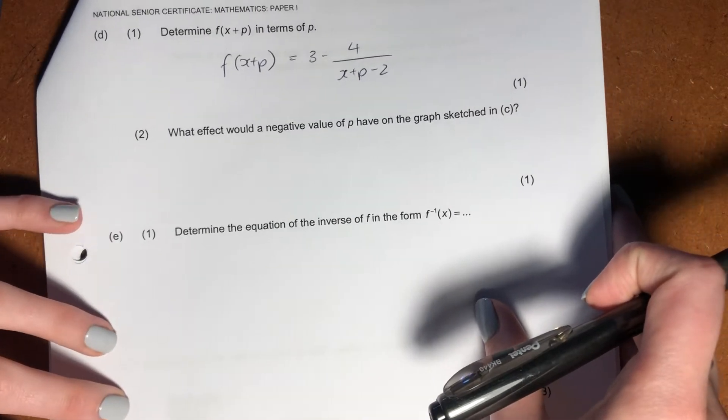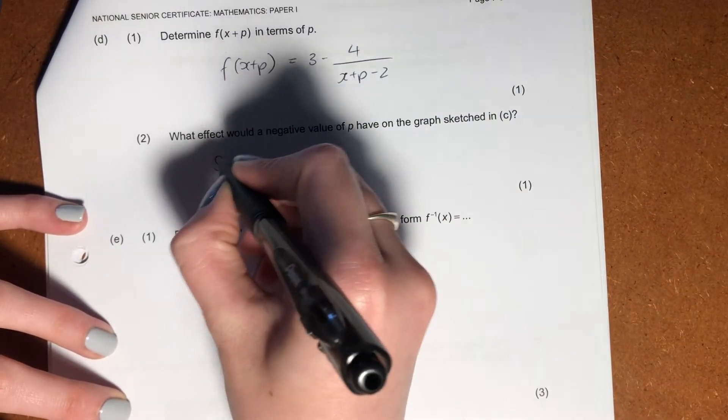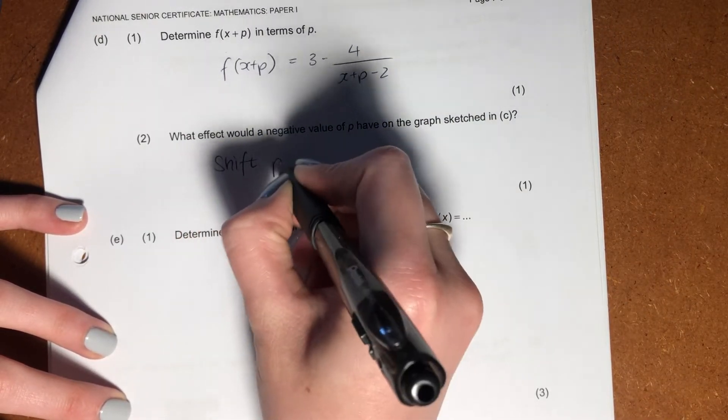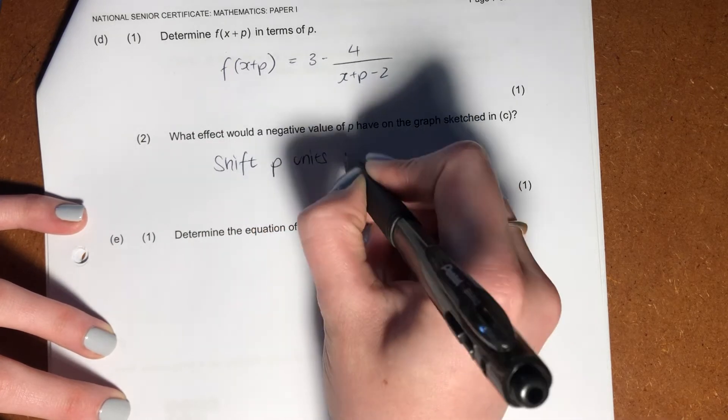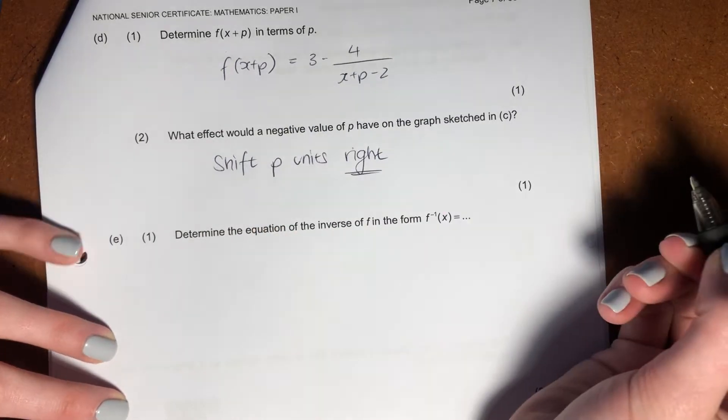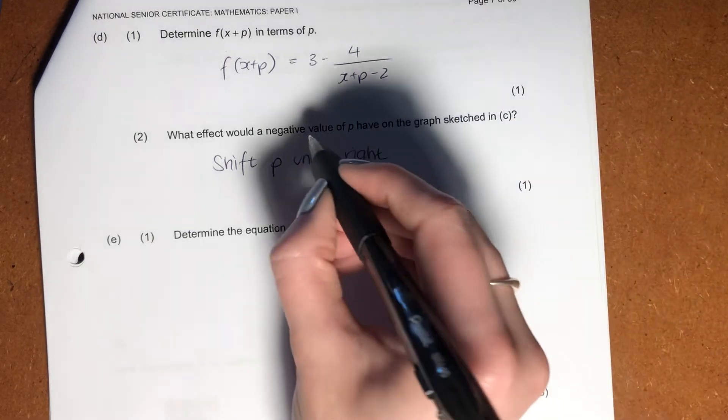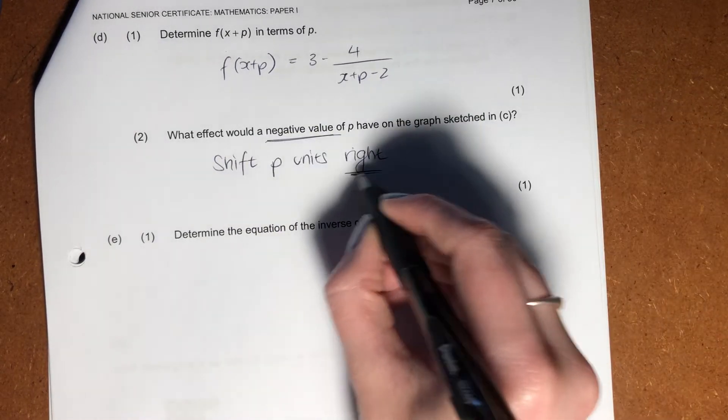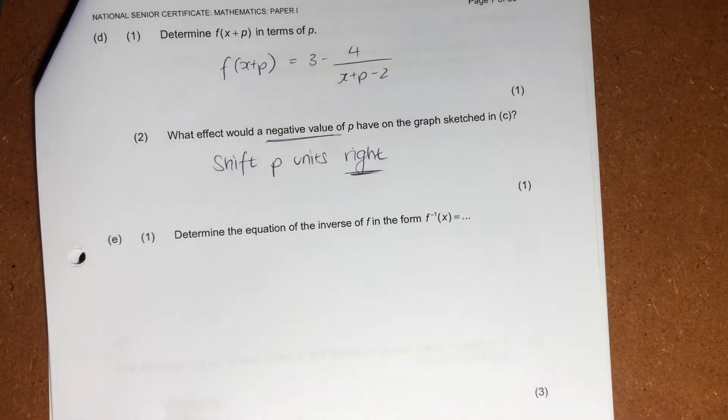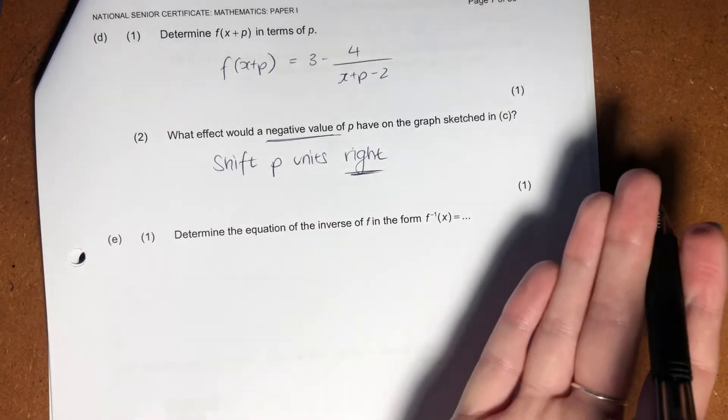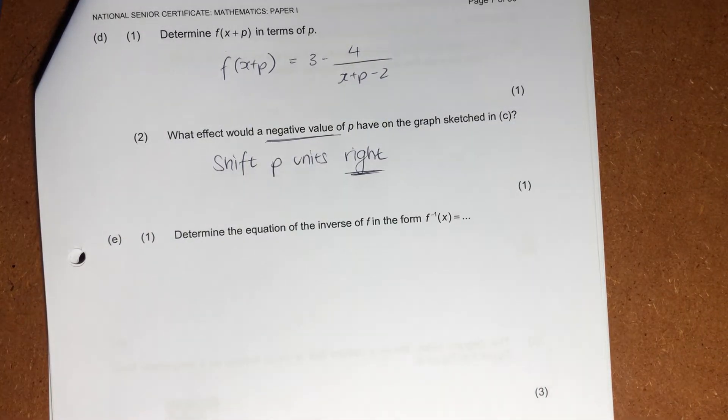So a negative p, which is what it currently has, you're literally going to say here, you would shift p units right. The key word being right, because they want you to show that you understand that a negative value links to a right shift. If it was a positive value, it would be a left shift. So just be careful there.